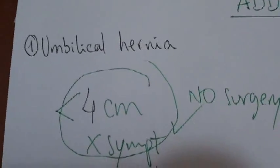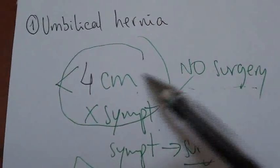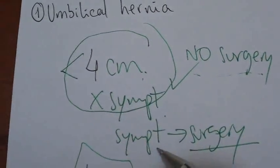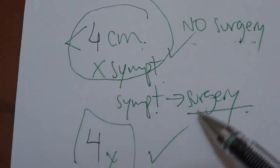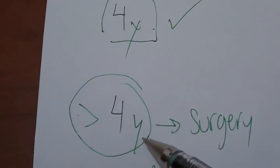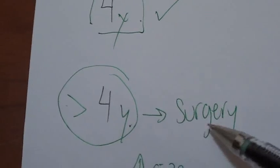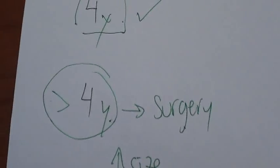So again, umbilical hernia, less than 4 cm, no symptoms, no surgery. Less than 4 cm with symptoms, he goes to surgery. And all hernias, they have to disappear by the age of 4. But if they remain more than 4 years old, he has to go to surgery because of the risk of increasing the size.